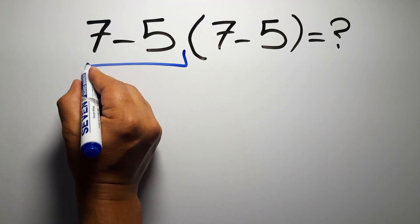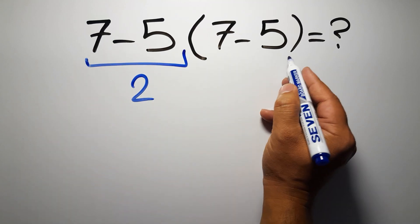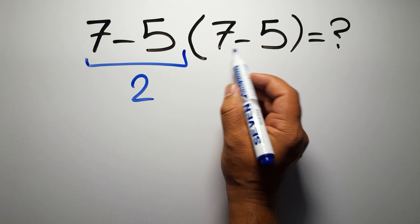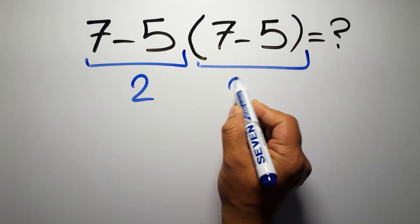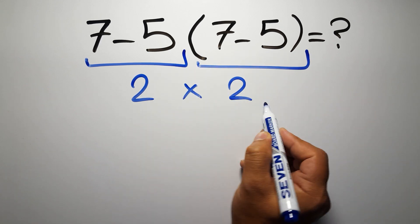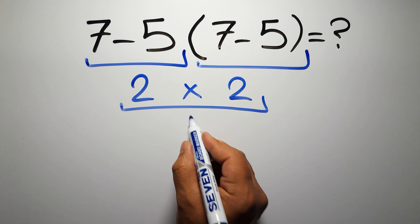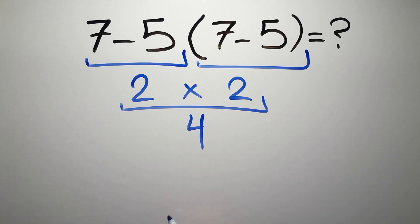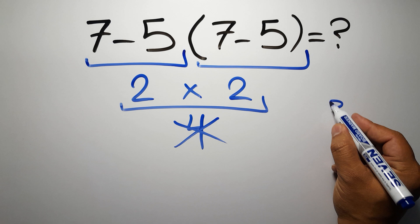7 minus 5 gives us 2, and again here inside this parentheses we have 7 minus 5, so 2 times 2 equals 4. But this answer is not correct because according to the rule of operations, first we have to...